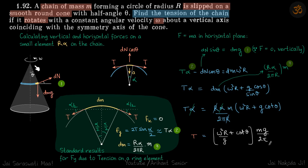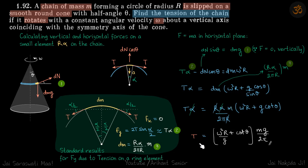Now to find DN, we look at the forces in the vertical direction. Since the motion of the chain is only in the horizontal direction, the vertical forces are balanced: dm·g = DN·sin theta. Since F = 0 vertically, we use this to eliminate DN. This gives us T·alpha as a function of everything else which we know. We then replace dm with its expression, and resolving will give us the tension in terms of the quantities given in the problem.